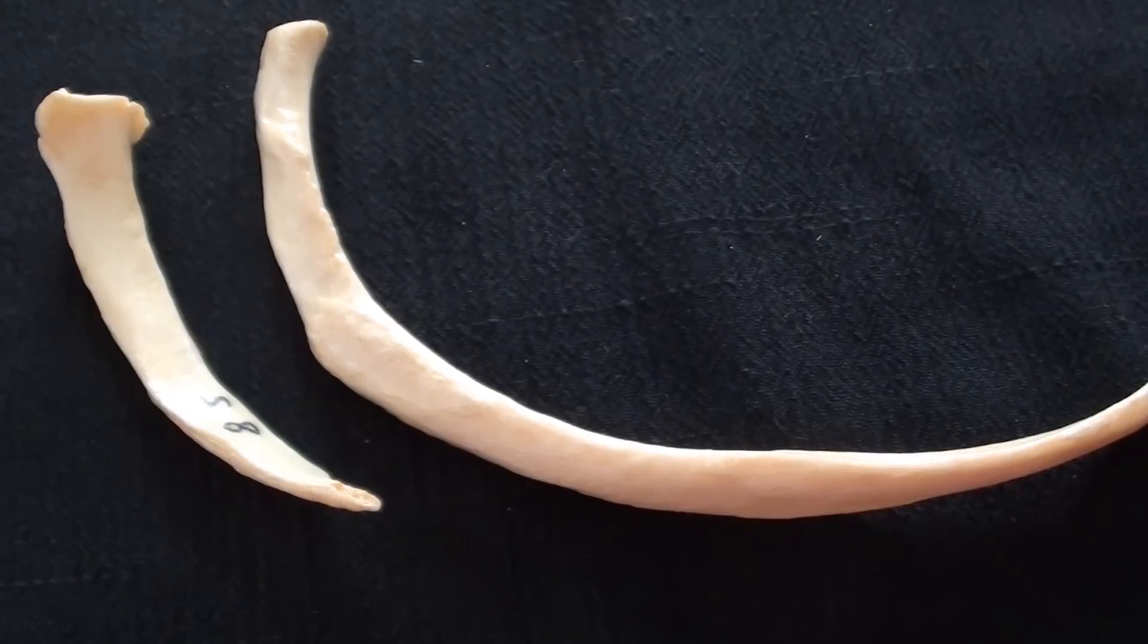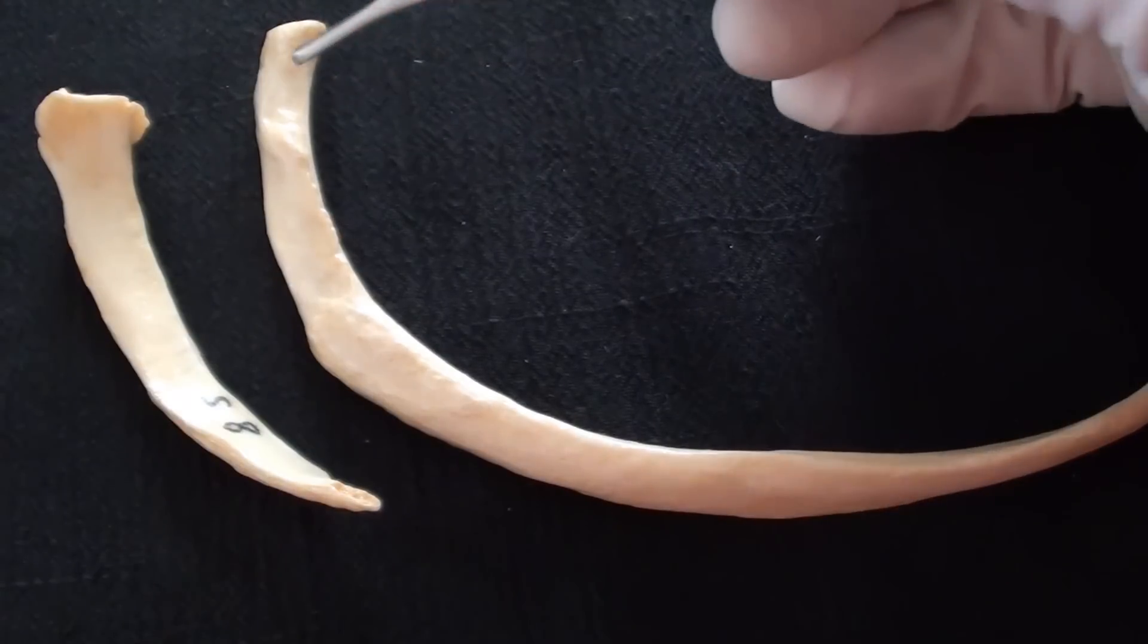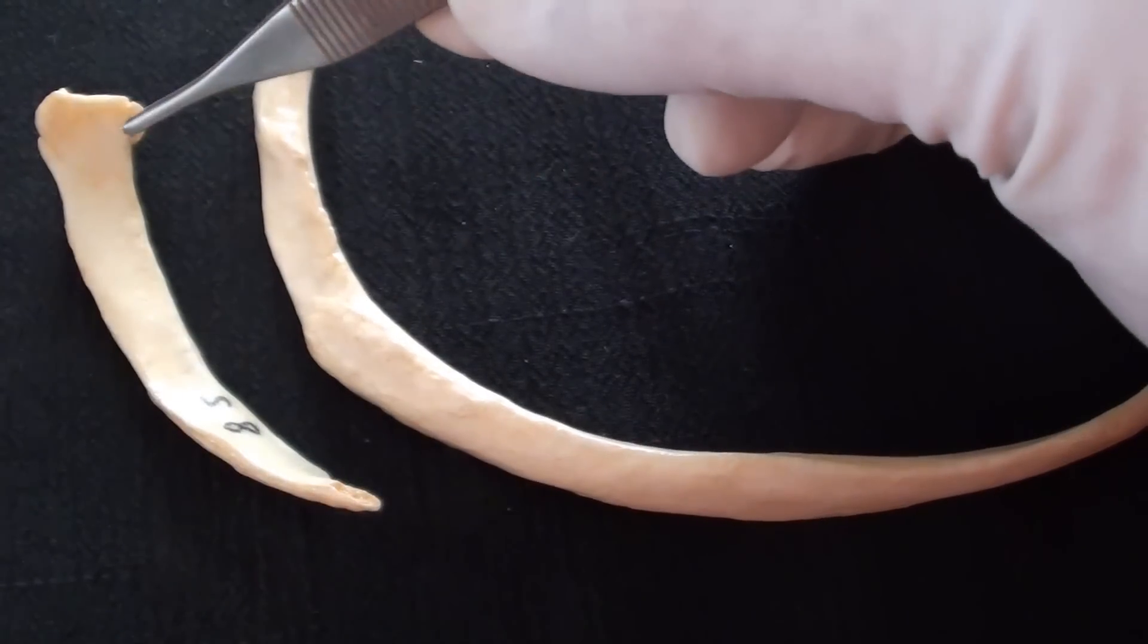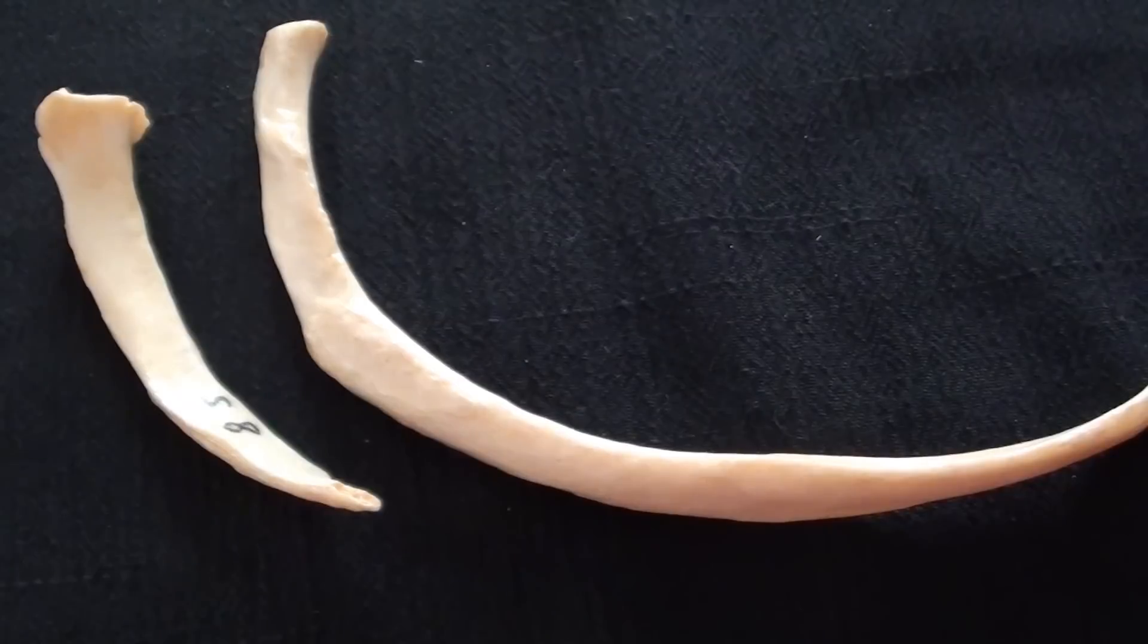Finally, the lowest two ribs, ribs number 11 and rib 12 are also considered to be atypical ribs. In many books they are also listed as floating ribs,